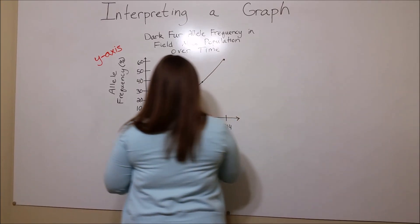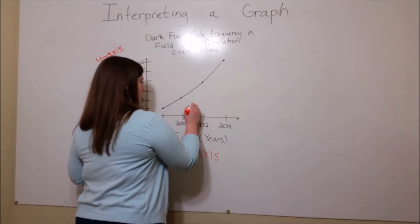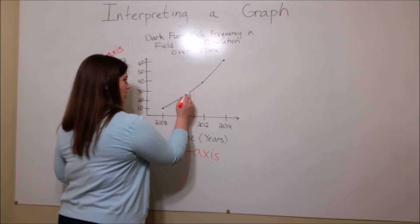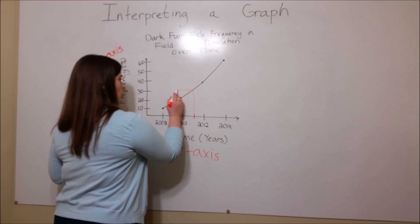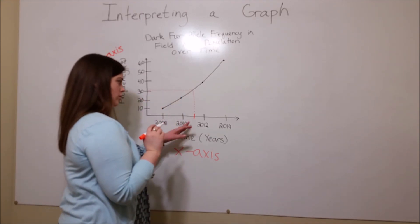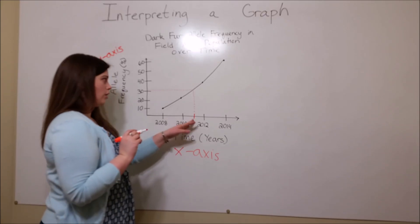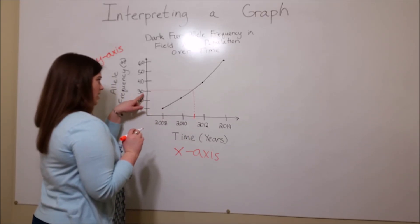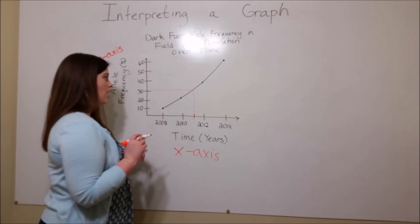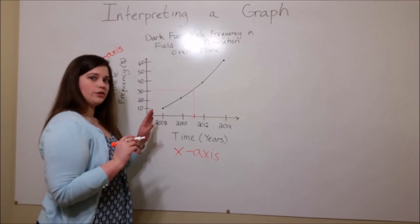And then measure up until you hit the line, and then measure over to the y-axis. This shows that in 2011, the dark fur allele frequency was approximately 30%, just a little bit higher. You can also do this from the other direction.